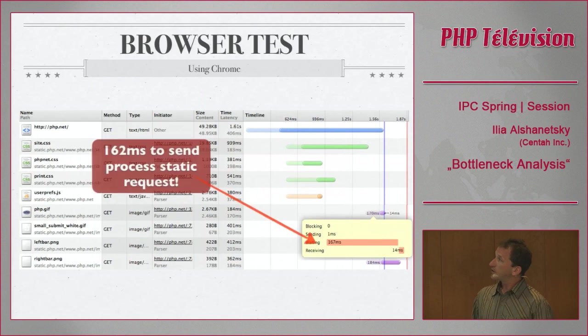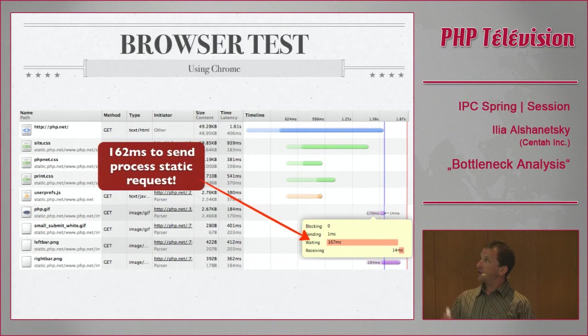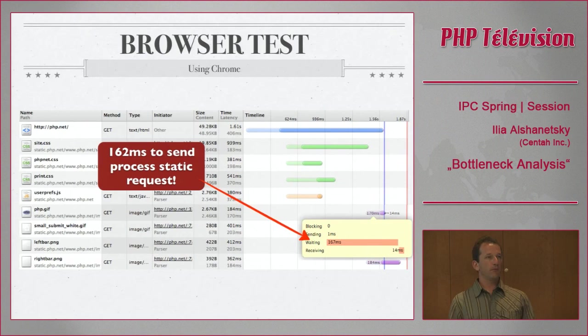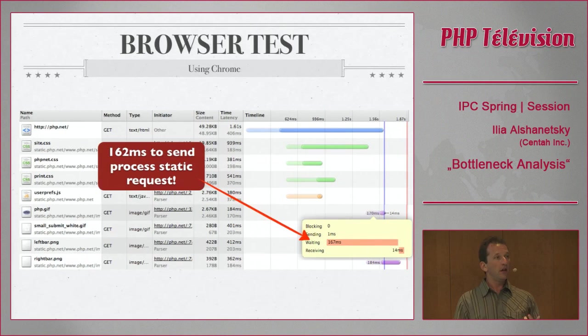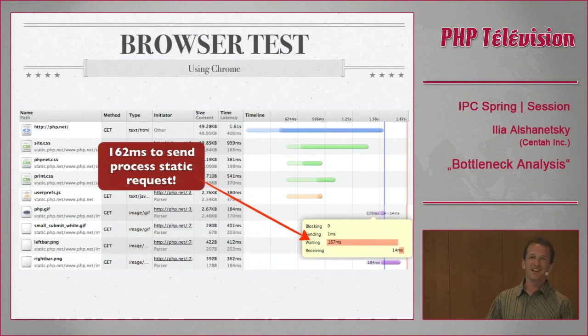php.net loads a bunch of images, but it takes 162 milliseconds just to wait before transmitting a static image. Why does the web server need to think that long before transmitting a static file? This is where mod_rewrite rules and htaccess come in — even though the server isn't doing real work, there's pre-processing to happen. Or you might have really slow disks. Whatever is slowing down static content will also slow down dynamic content.